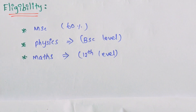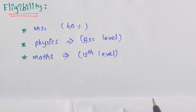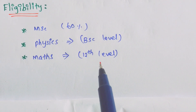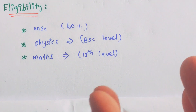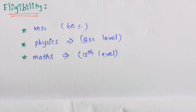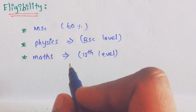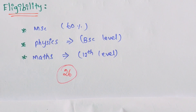Physics is an ancillary subject up to BSc level, which most chemistry students study in second year. Pure science students — including biology students — are also eligible. Age criteria: the upper limit is 26 years for the general category, with some relaxation available. This is the main eligibility criteria.